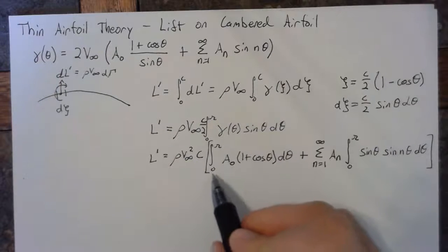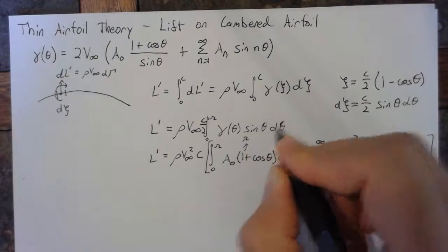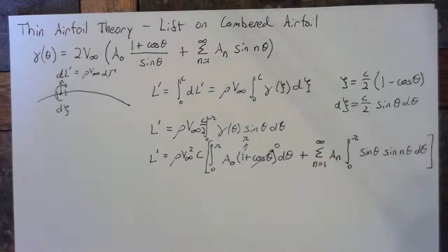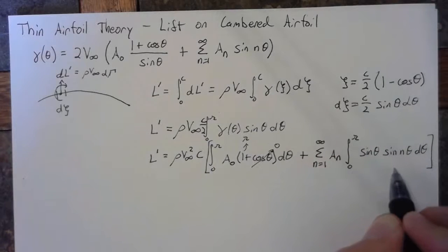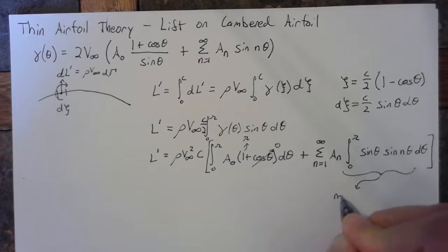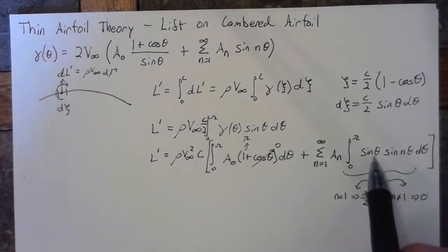So the integral from 0 to pi of 1 is simply equal to pi. And the integral from 0 to pi of cosine of theta equals 0. And then we'll use our Fourier analysis that we discussed in the previous lesson to say that this integral, when n equals 1, will be pi over 2. But if n is not equal to 1, then this will be 0.